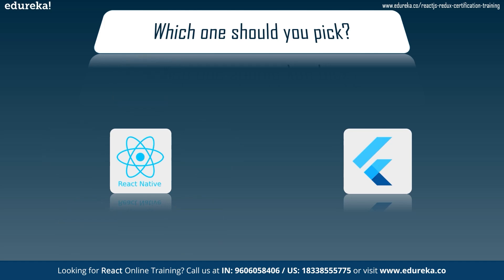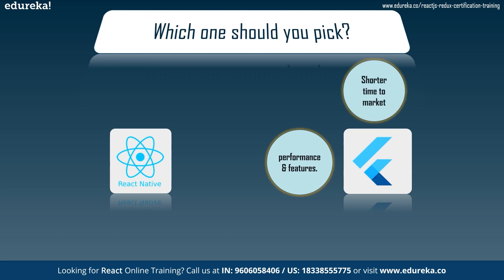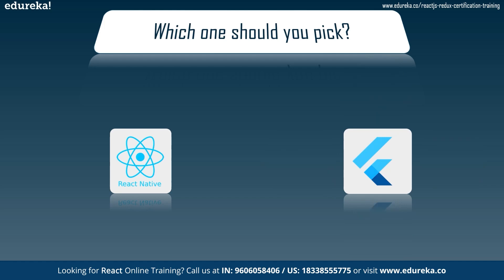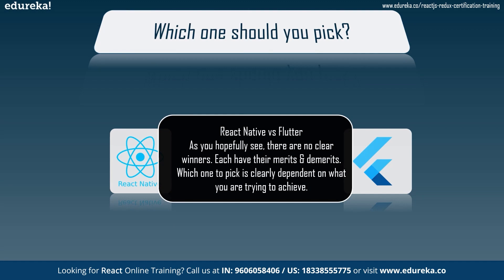Now let's hear it for Flutter. Apps made with Flutter have better performance, and Flutter gives a better feature set to build apps. Unlike React Native, Flutter comes with native modules already built in, so there's no tinkering to optimize your application to work with native modules. This means development time is shorter and time to market is shorter as well. It costs less and it's easier to build. And finally, it has better forward as well as backward compatibility. Since both have advantages and disadvantages, there are no clear winners — each has its own merits and demerits, and which one to pick is clearly dependent on what you are trying to achieve.